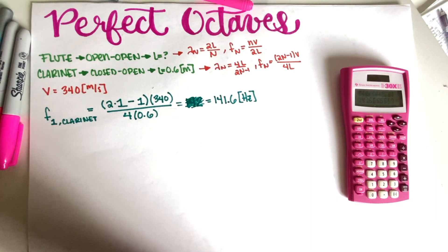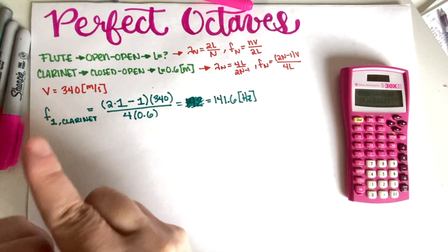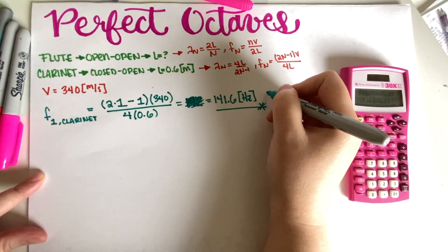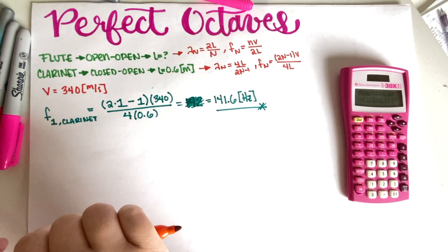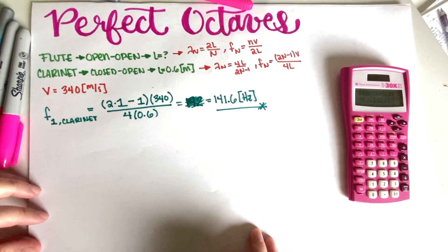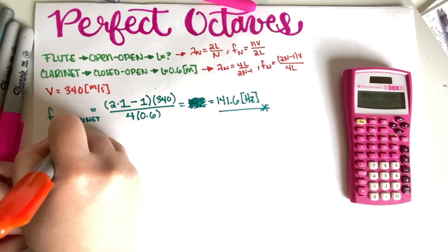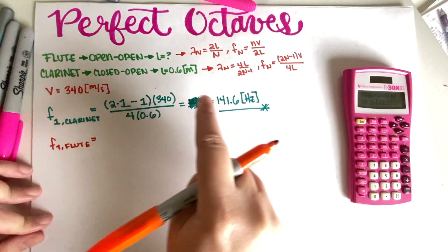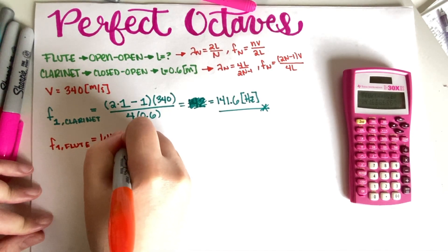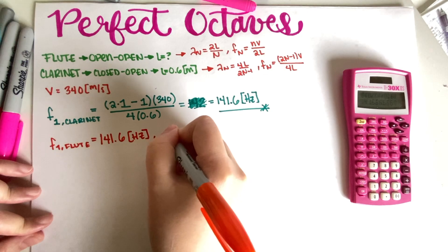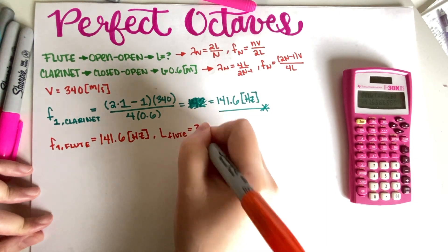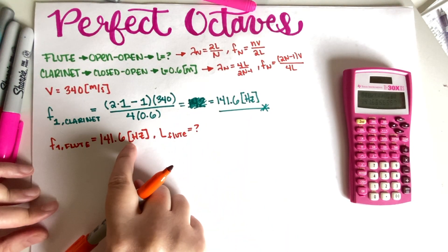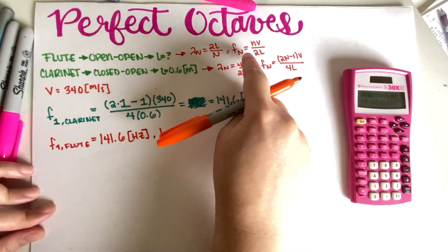So this is the final answer for part A. For part B, they are asking us: if you wish to make a flute that has the same fundamental frequency as the clarinet in part A, how long must it be? So now they are saying that f1 flute must be the same, and given this constraint, what must be the length of the flute?